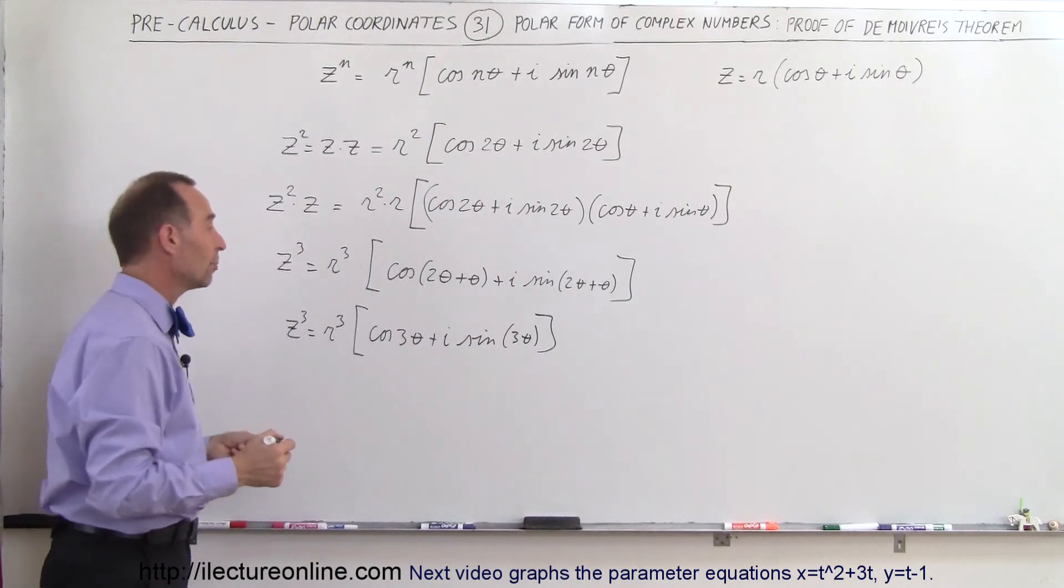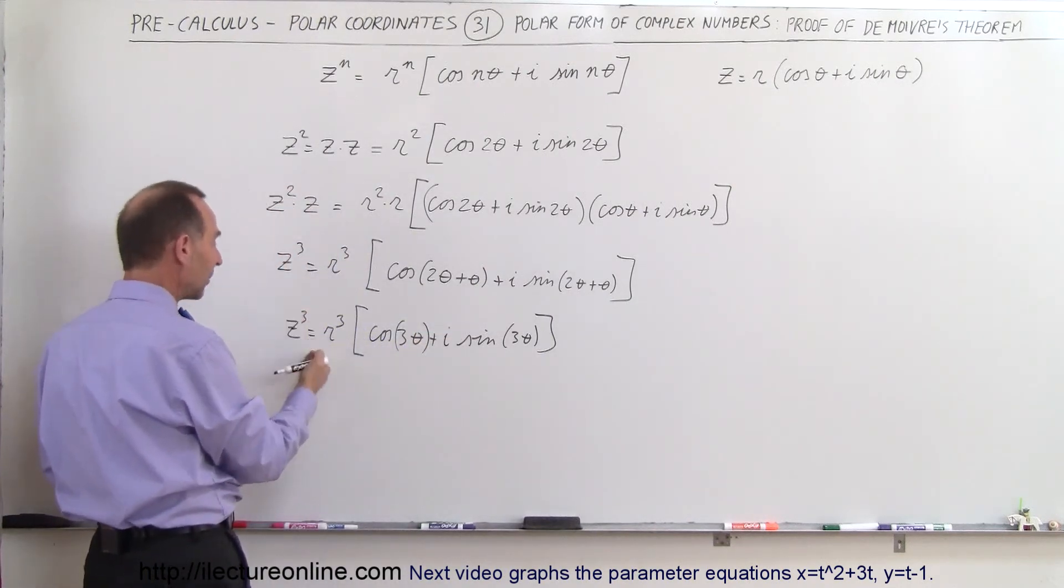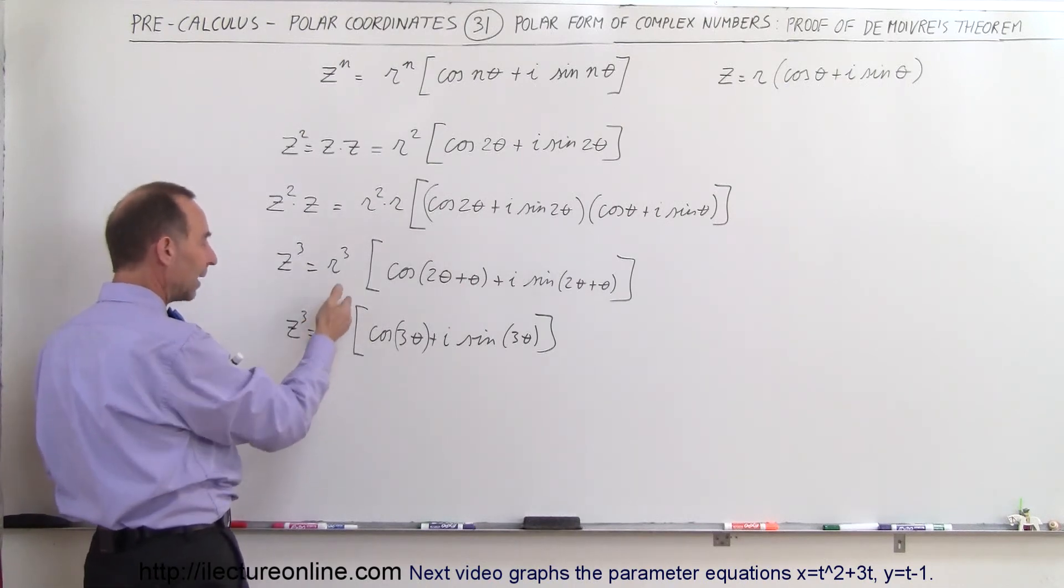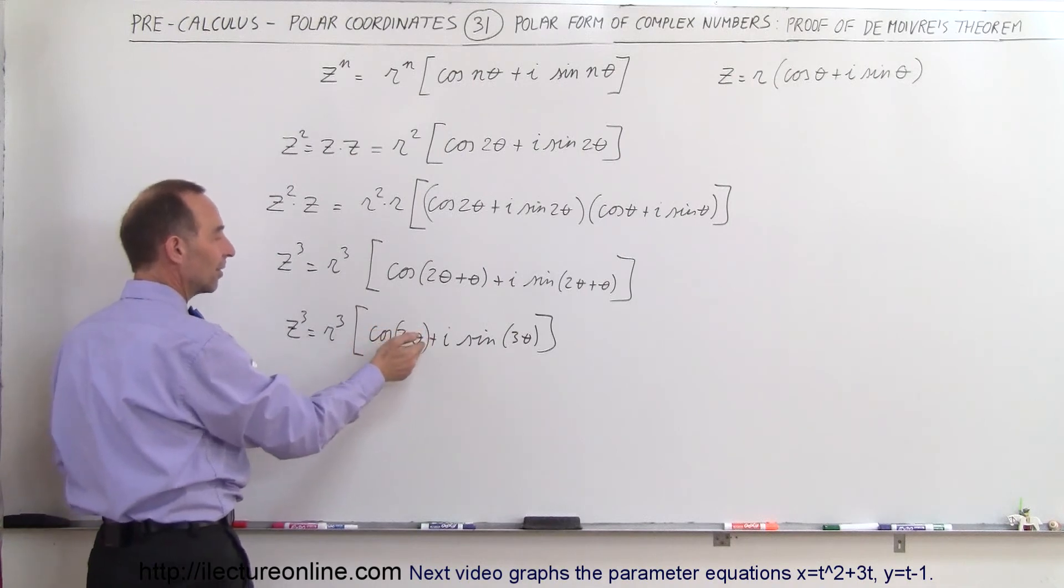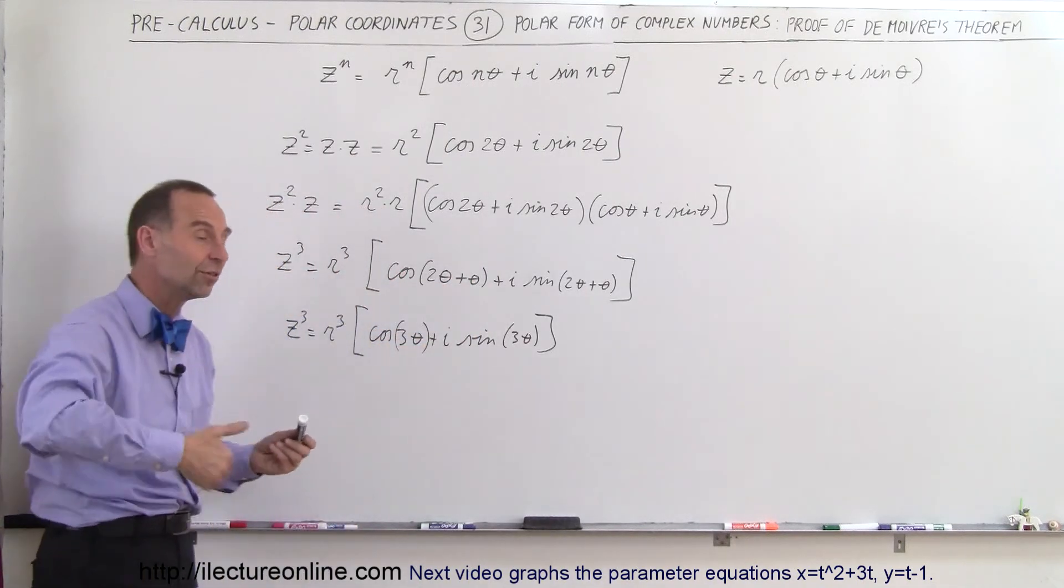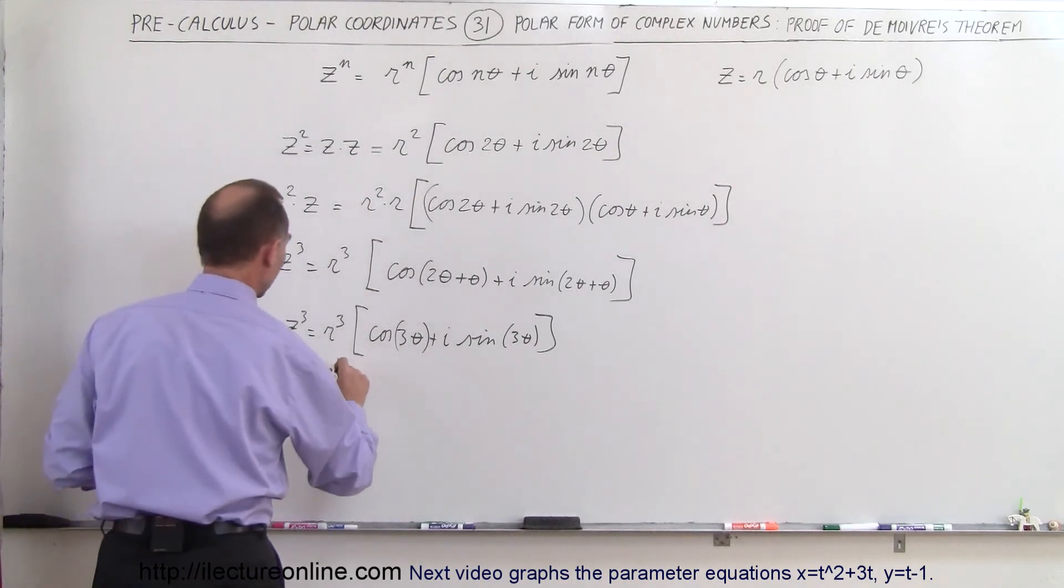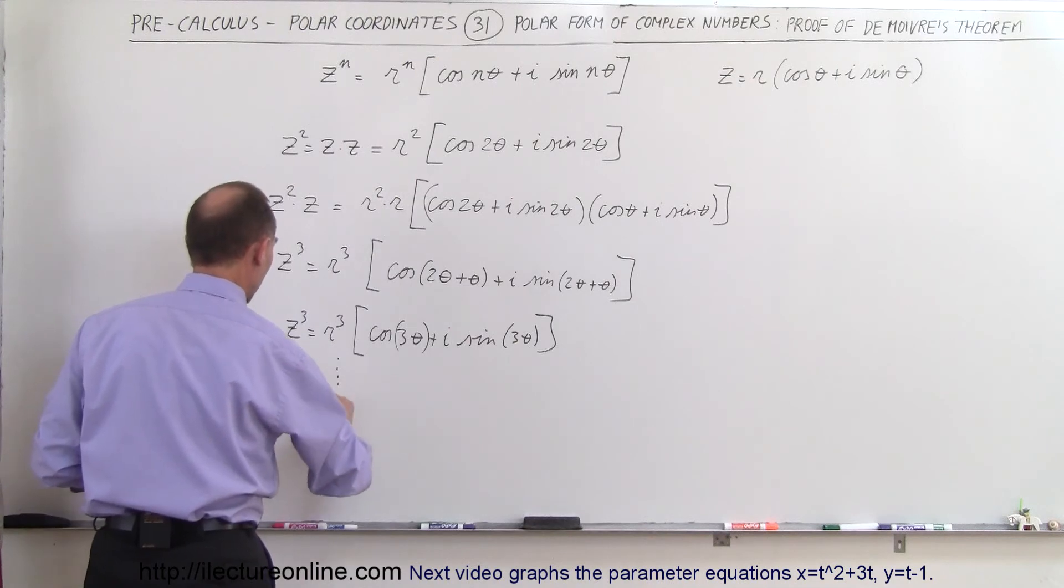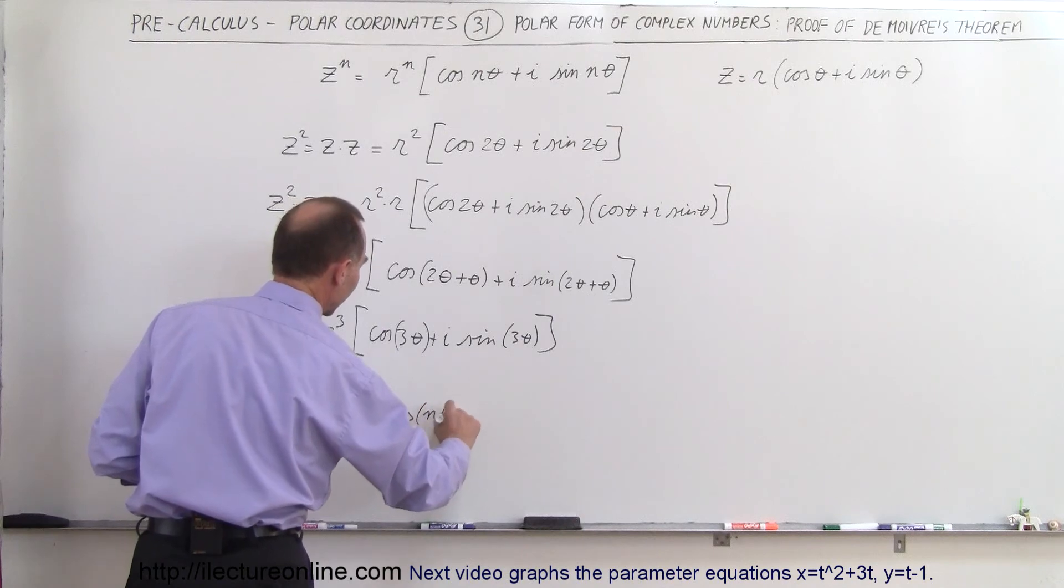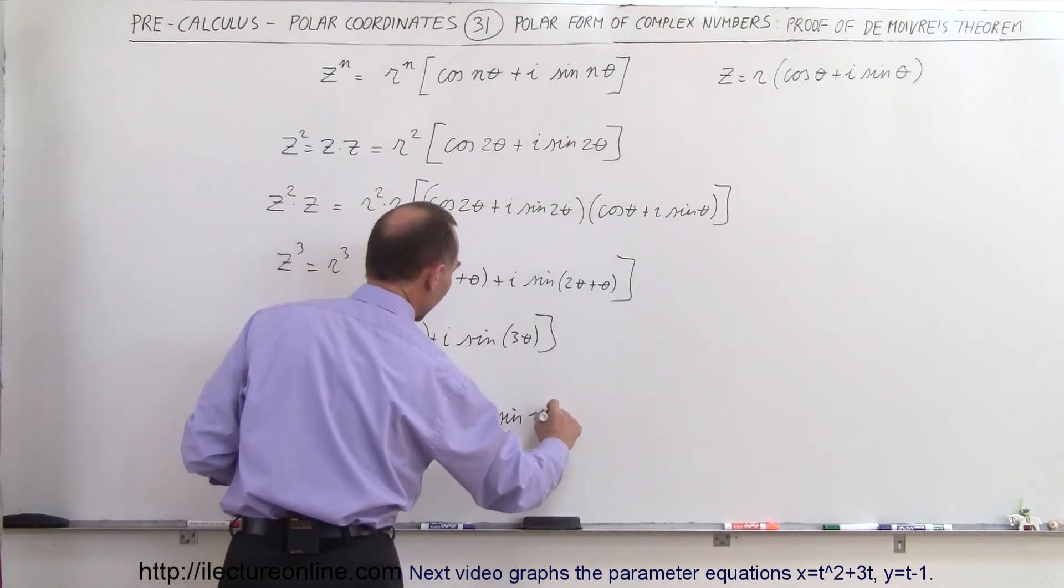And we can keep going. We can multiply z cubed times z to get z to the fourth, z to the fifth, and z to the sixth. We can see that in each case we'll get r to the n times cosine of n theta plus i times sine of n theta. If we do this an infinite number of times, we can get z to any power. Therefore, we can conclude that z to the n power equals r to the n power times cosine of n theta plus i times sine of n theta.